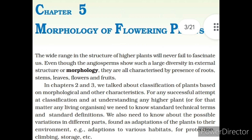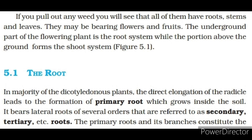We also need to know about the possible variations in different parts found as adaptations of plants to their environment — for example, adaptations to various habitats for protection, climbing, storage, etc. If you pull out any weed, you will see that all of them have roots, stems and leaves. They may be bearing flowers and fruits. The underground part of the flowering plant is the root system while the portion above the ground forms the shoot system.